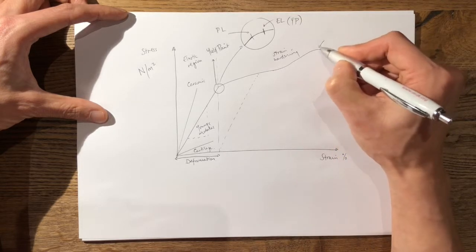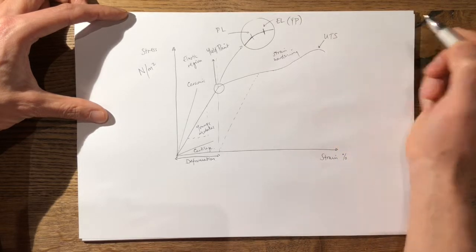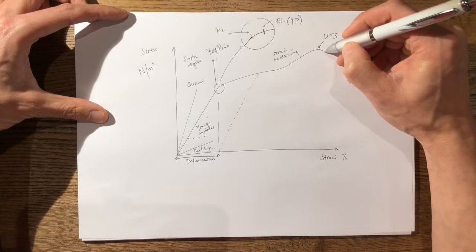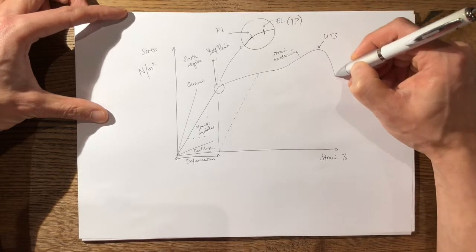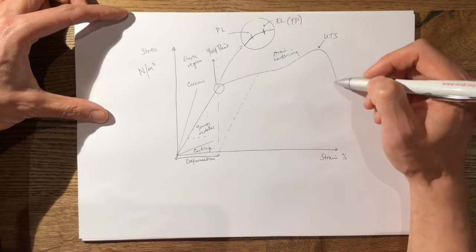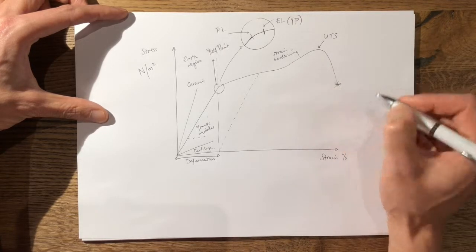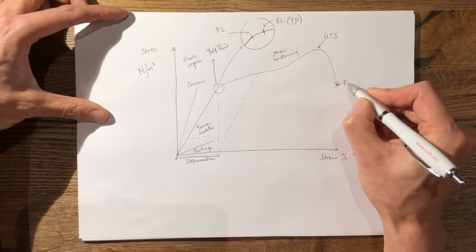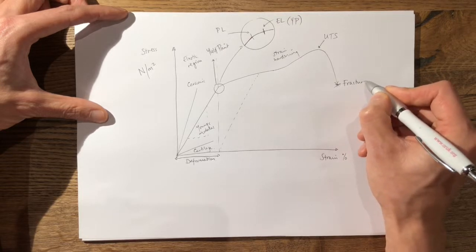Then the highest point of the curve is known as the ultimate tensile strength and then the material undergoes a phenomenon called necking, which is the gradual decrease in cross-sectional area until the material eventually fails or fractures.